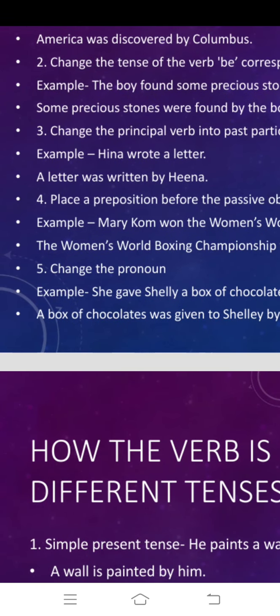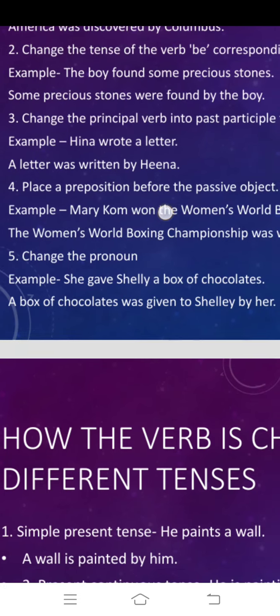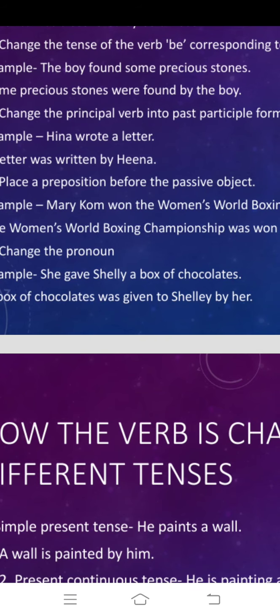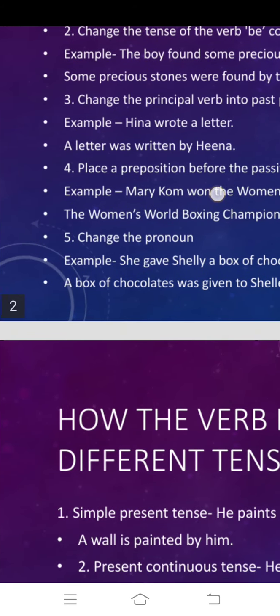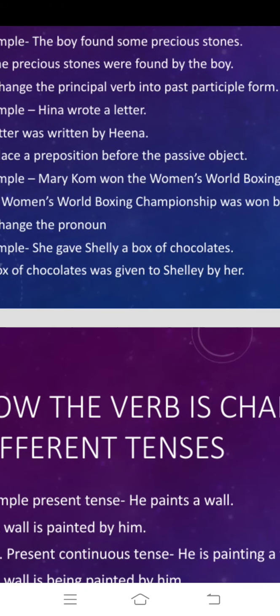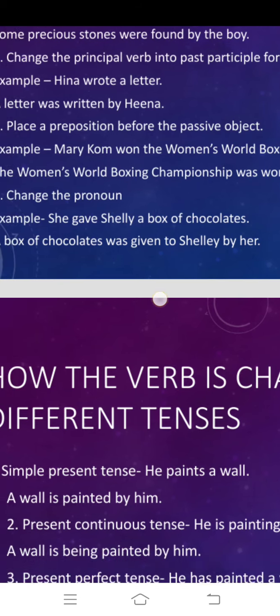Fifth rule: change the pronoun. This is also very important. For example, she gave Shelly a box of chocolates. The passive form is: a box of chocolates was given to Shelly by her. So we have changed the pronoun 'she' into 'her'.